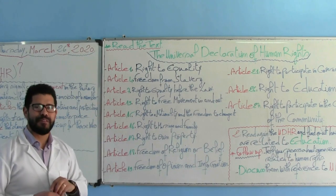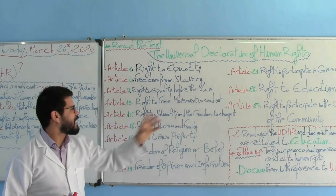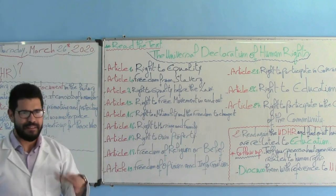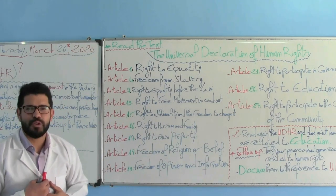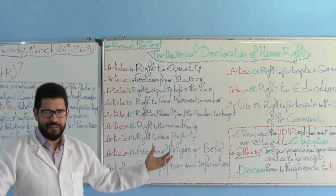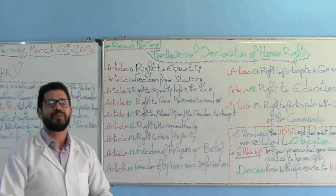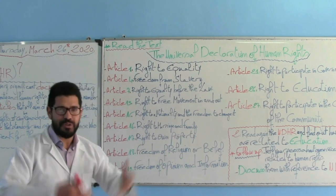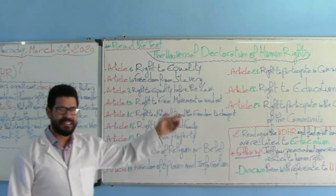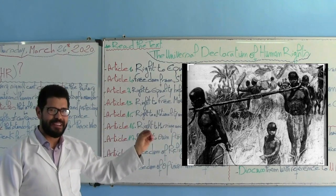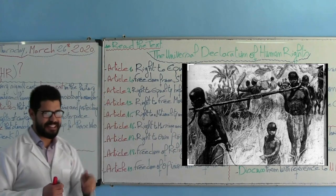Article number four: Freedom from slavery. So what do we mean by freedom from slavery? We are all born free. Nobody has the right to enslave anybody. We are all born free and we need to enjoy this freedom to the maximum. This is the picture that we can use to relate to Article number four.